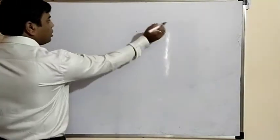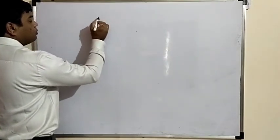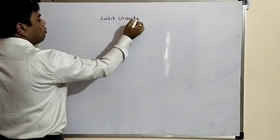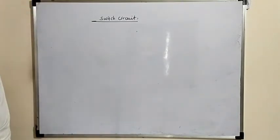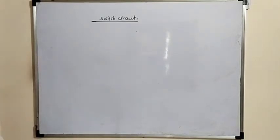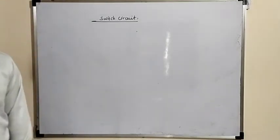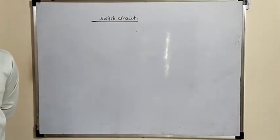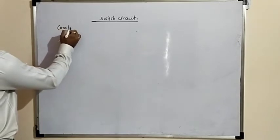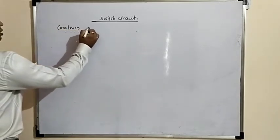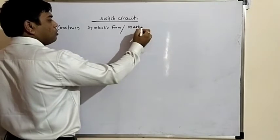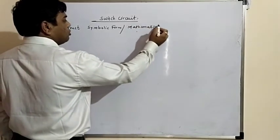Hello students. Today we are going to draw switching circuits from mathematical statements. Yesterday we already discussed how to draw the symbolic form from the circuit. Today we are going to discuss about constructing the symbolic form, or what we call a mathematical statement.